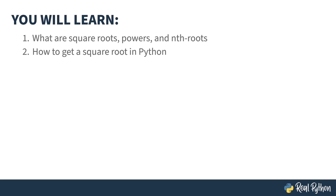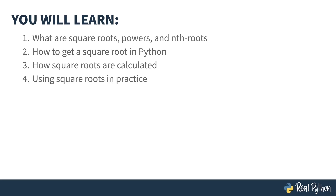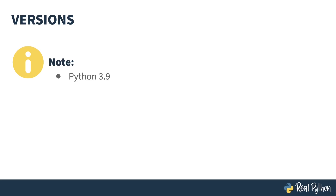You will also learn how to get a square root in Python, how square roots are calculated, and using square roots in practice. A quick note on versions: all code in this course was tested with Python 3.9. Square root has been around since the beginning, so most things will work in most versions, and I'll do my best to point out differences as I go along.